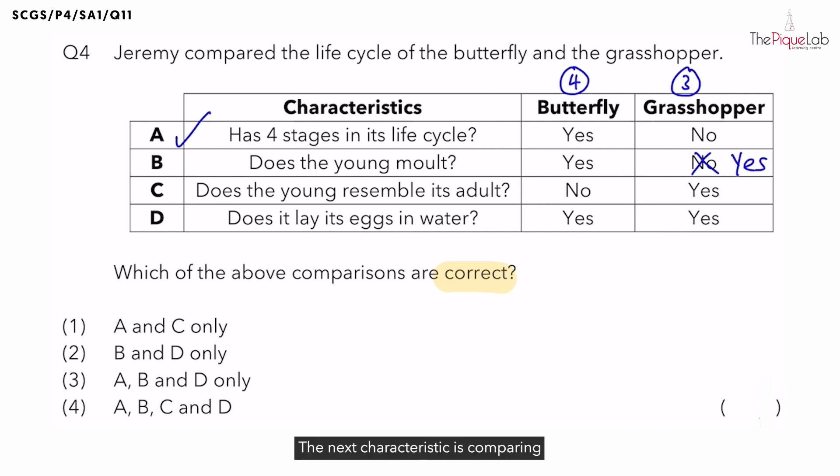The next characteristic is comparing if the young of the organism resembles its adult. We mentioned that the butterfly has a four-stage life cycle. Let's recall, for all organisms that have four stages in its life cycle, does the young resemble its adult? No. We know that the larva and the pupa does not resemble the adult. Hence, as long as the organism has a four-stage life cycle, the young would not resemble its adult.